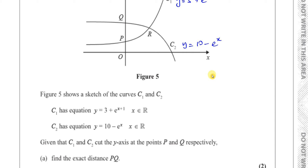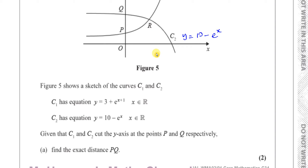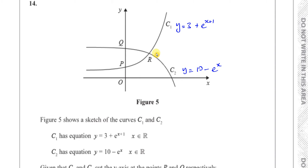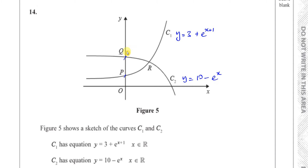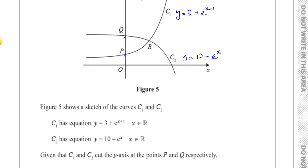Given that C1 and C2 cut the y-axis at the points P and Q respectively, we have to find the exact distance PQ. Since P and Q are both on the y-axis, we can find their y-coordinates by substituting x equals 0 into each equation.